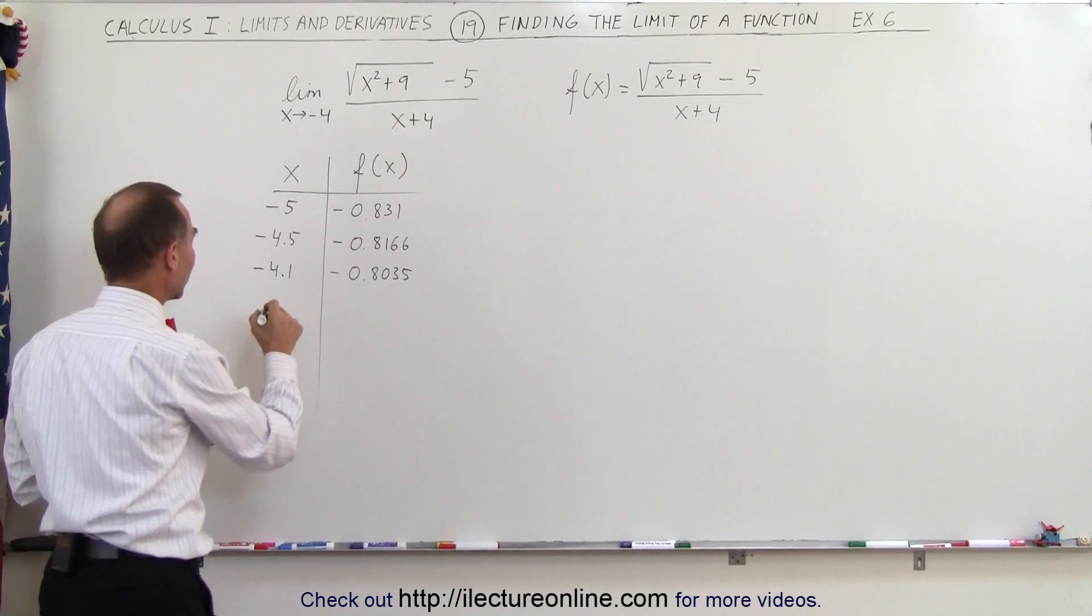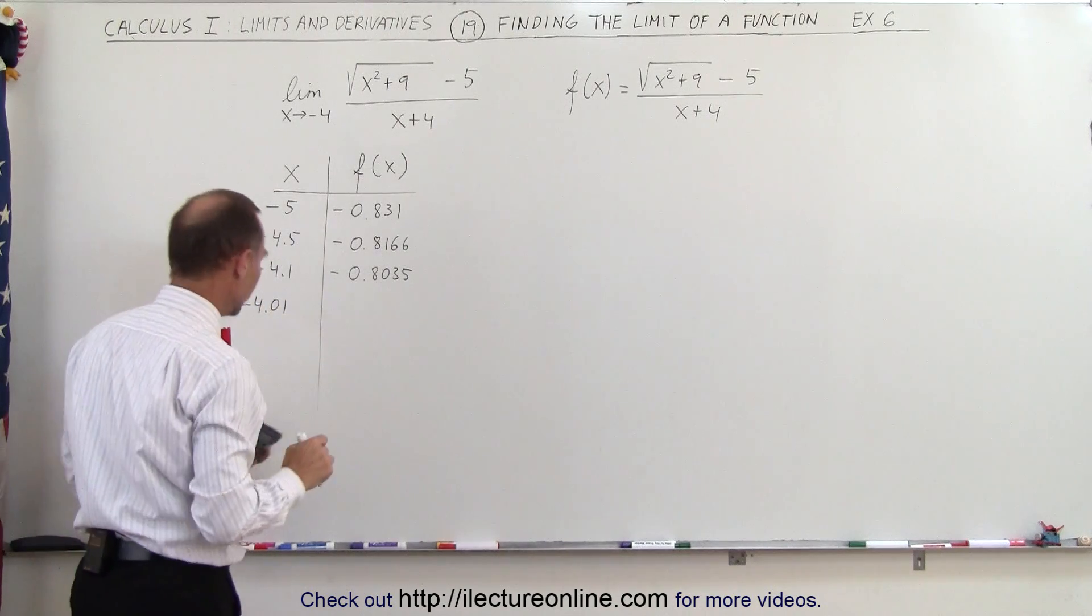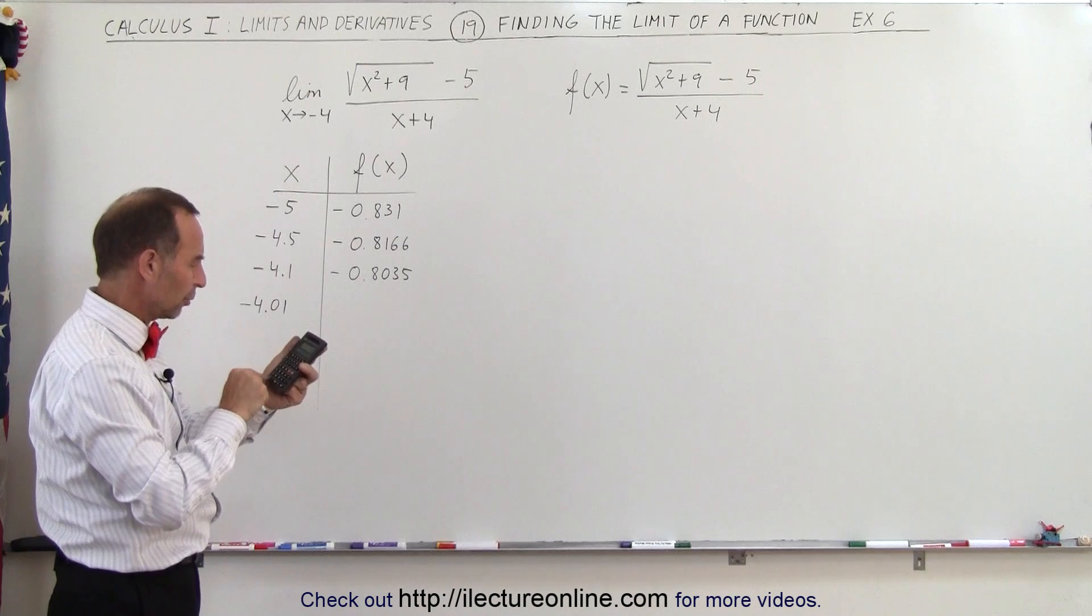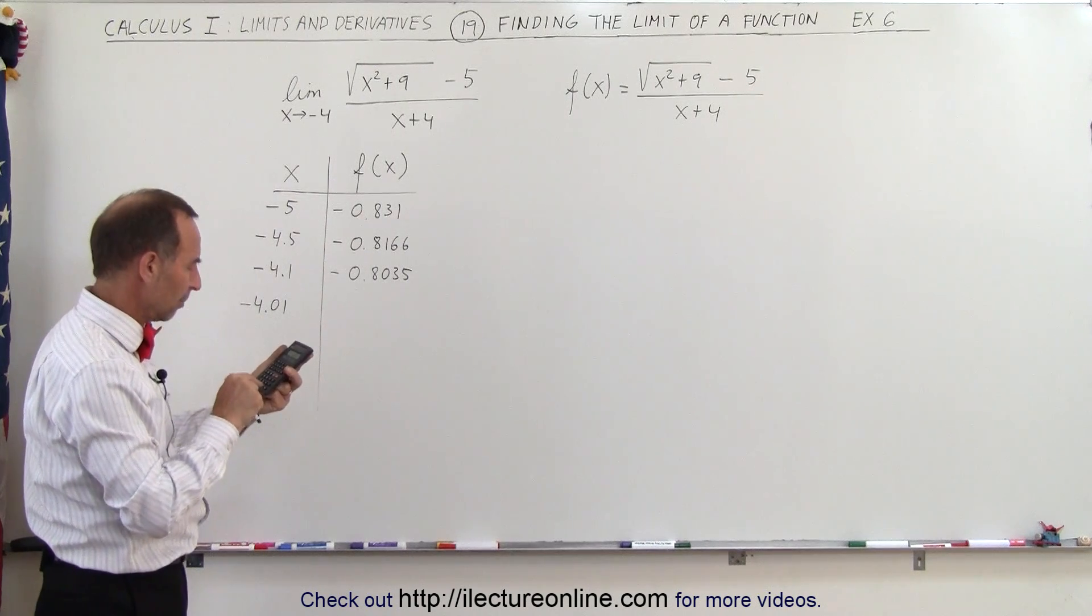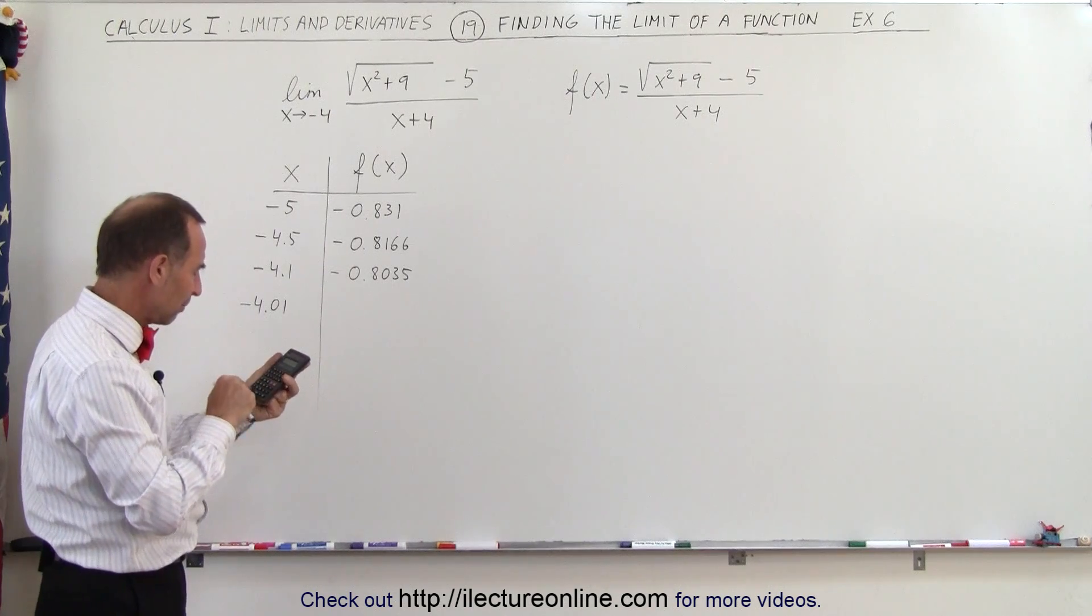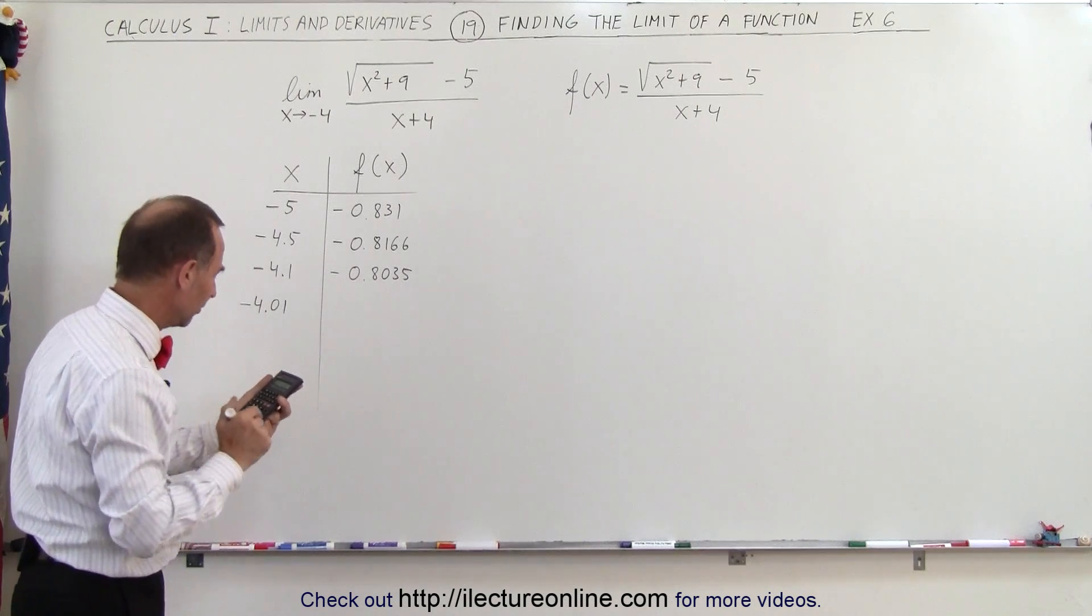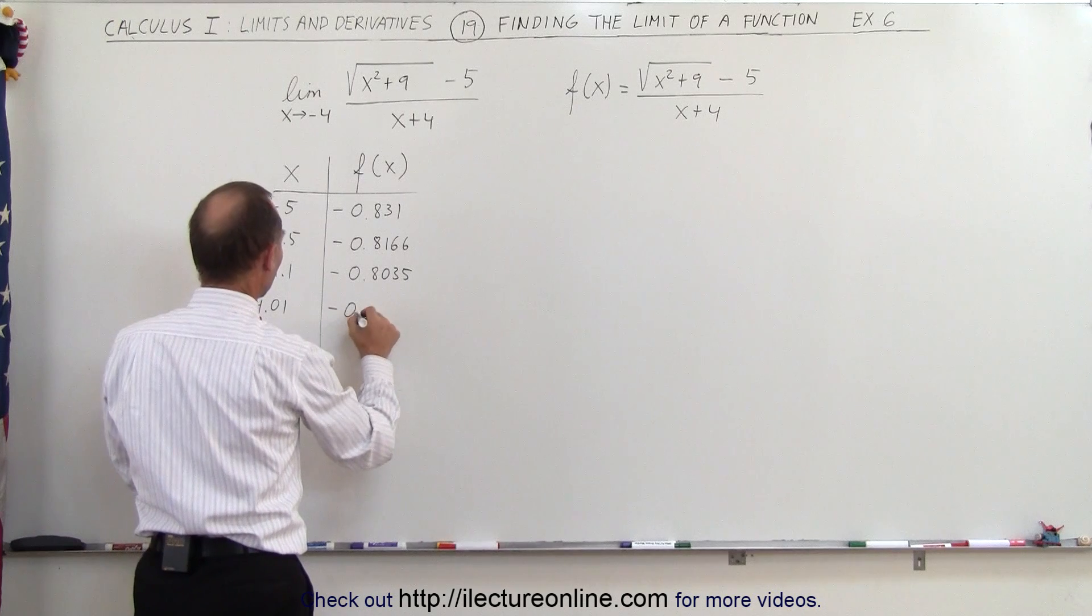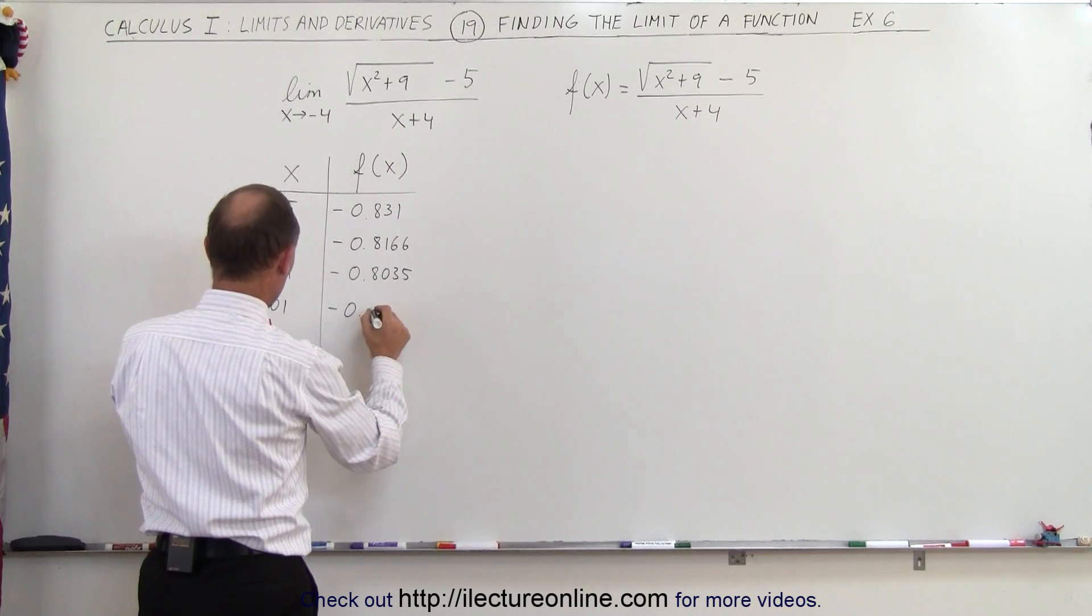So let's continue to see what we get. So how about negative 4.01? All right, so 4.01 squared plus 9, take the square root, subtract 5 from that, and divide by negative 0.01, and so now we get negative 0.8004.